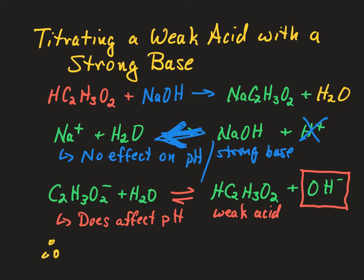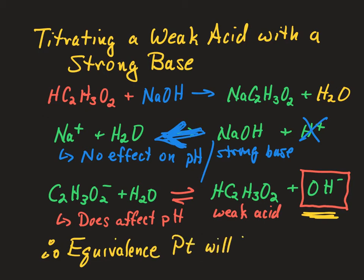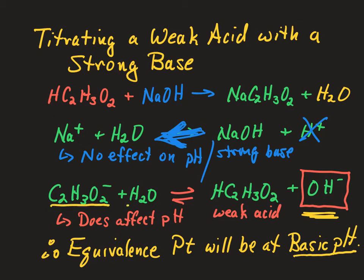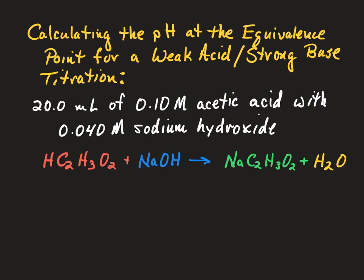Because the only thing produced that affects the pH is hydroxide ions, the equivalence point will be at a basic pH. So we can have a titration where the equivalence point isn't at 7 — it is at a basic pH because the product ion reacts with water to create excess hydroxide ions. Now we'll show an example of calculating the pH at the equivalence point for a weak acid–strong base titration.